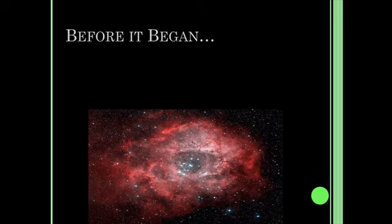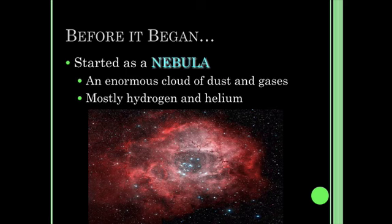As this started out, we had a nebula, which is a giant cloud of dust and gas, mostly hydrogen and helium. This was probably several light years across, and it could have been from other stars that had exploded, or it was just a clump of dust and gas that was more concentrated than what was normal in space.